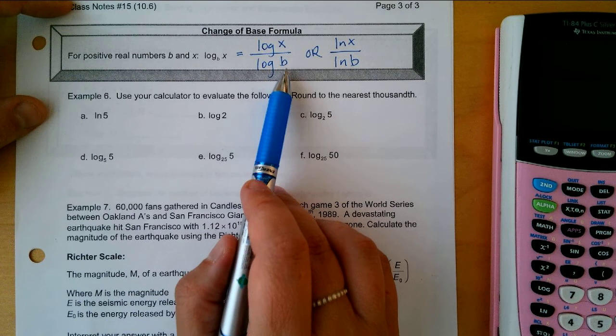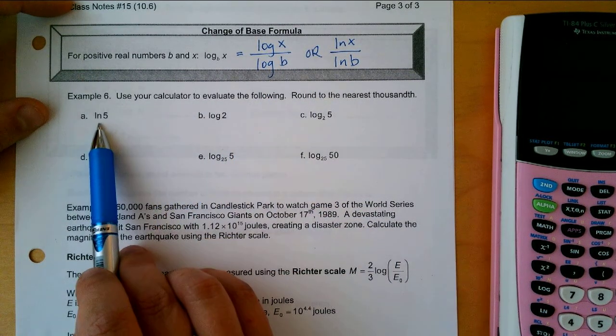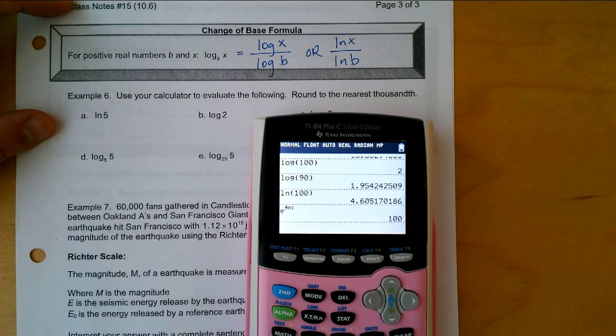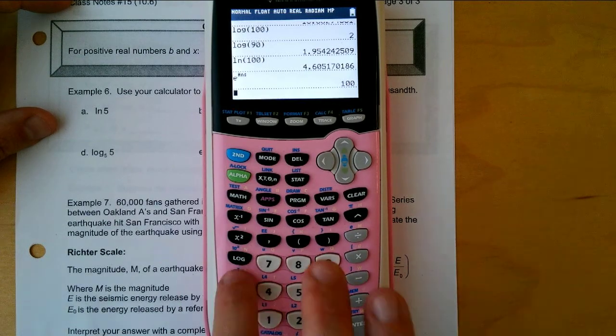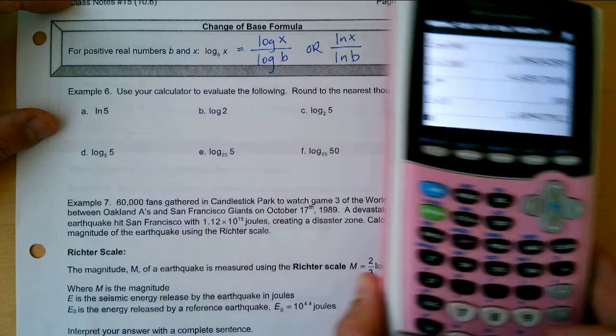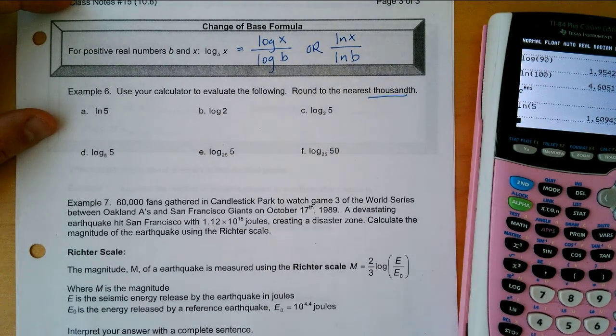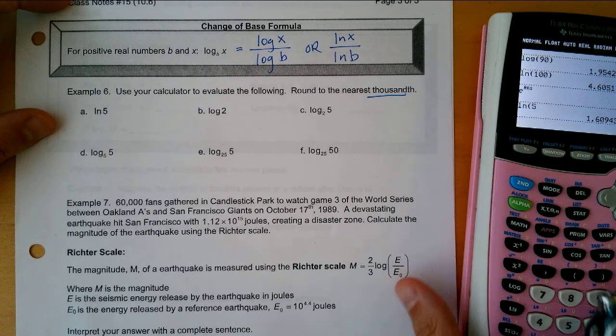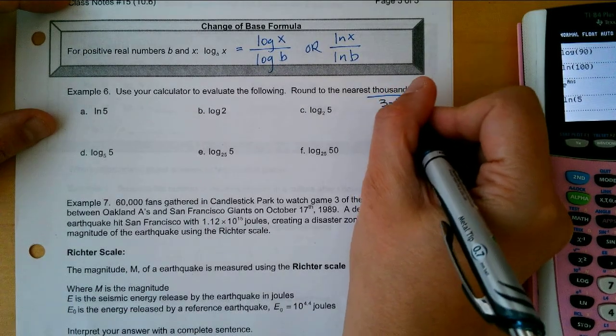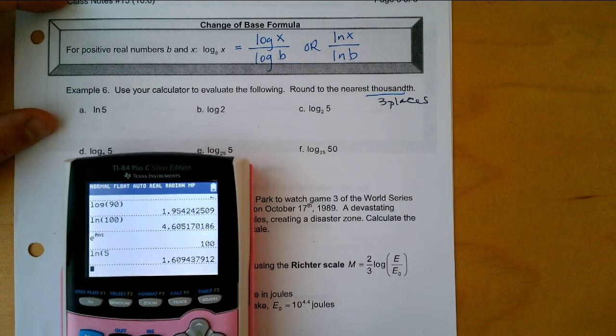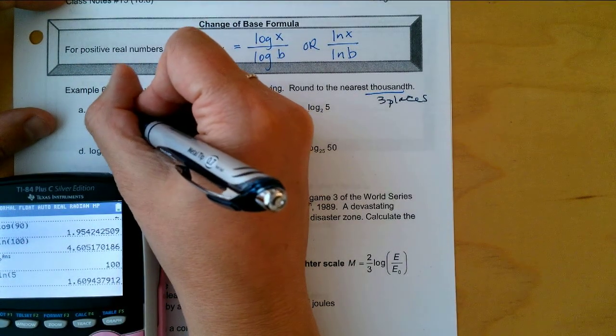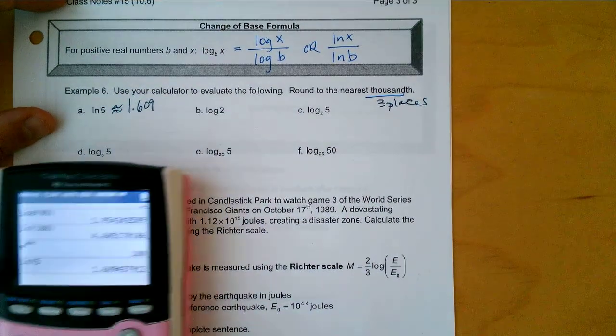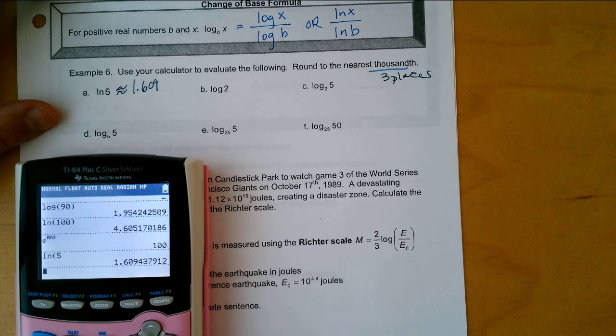Use your calculator to evaluate the following. LN of 5. So all of these you're just using your calculator to evaluate. Let's just practice this. Take the LN of 5 enter, and we want to round to the nearest thousandth place. That's a good opportunity for us to talk about place value. When I say round to the thousandth place, what decimal place is that? How many places? Yes, three places. So let's practice. We have equals, or actually we could put approximately equals 1.609. Is that rounded correctly? Yes.